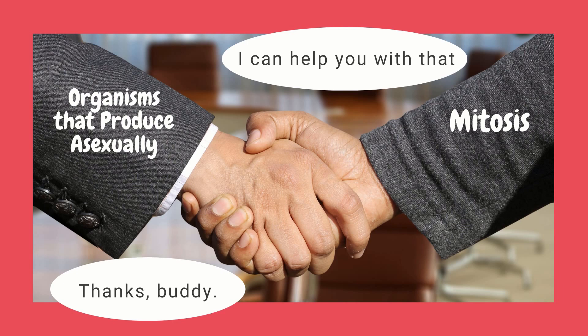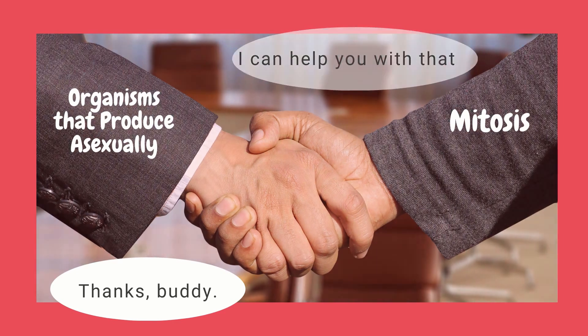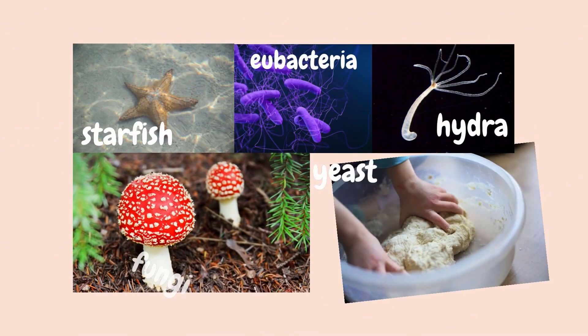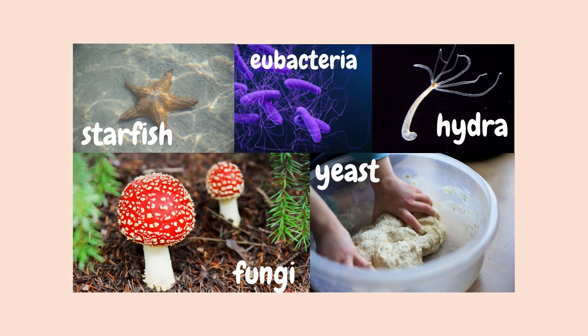Since mitosis produces genetically similar offspring, it allows some organisms to maintain alternating life stages — asexual and sexual — such as fungi. Still can't believe how mitosis is so important in our lives?